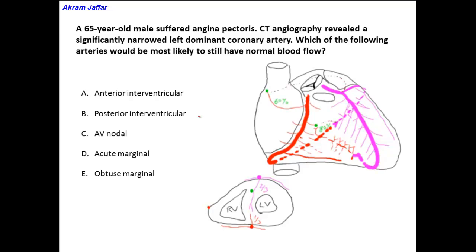A 65-year-old male suffered angina pectoris. CT angiography revealed a significantly narrowed left dominant coronary artery. Which of the following arteries would be most likely to still have normal blood flow? First, let's visualize in our mind's eye the left coronary artery.